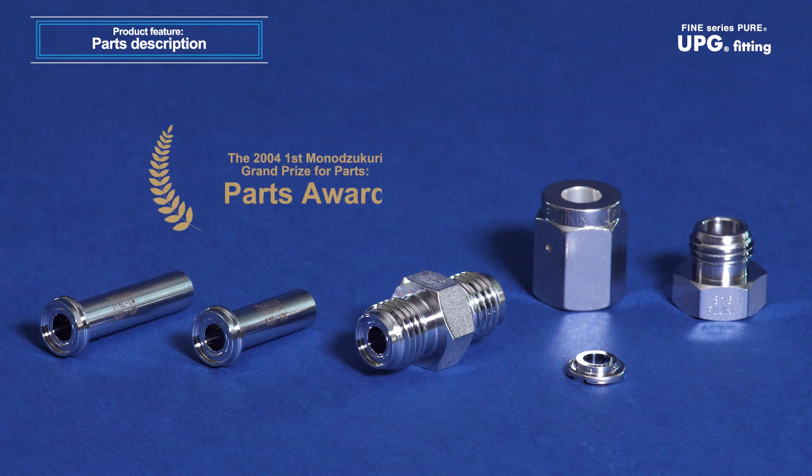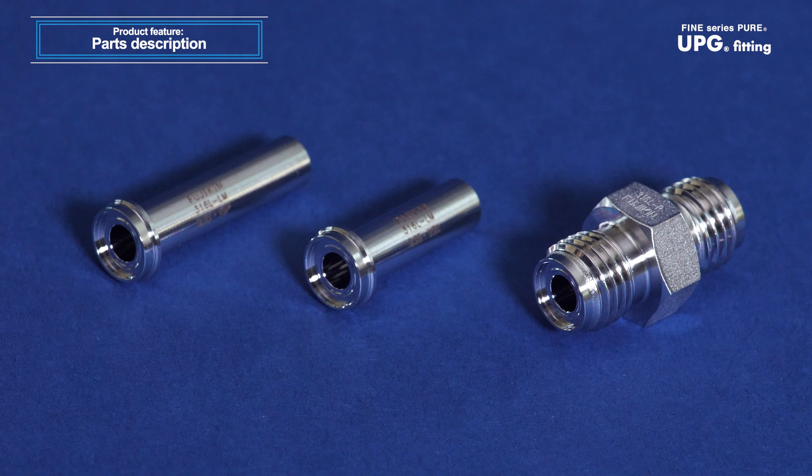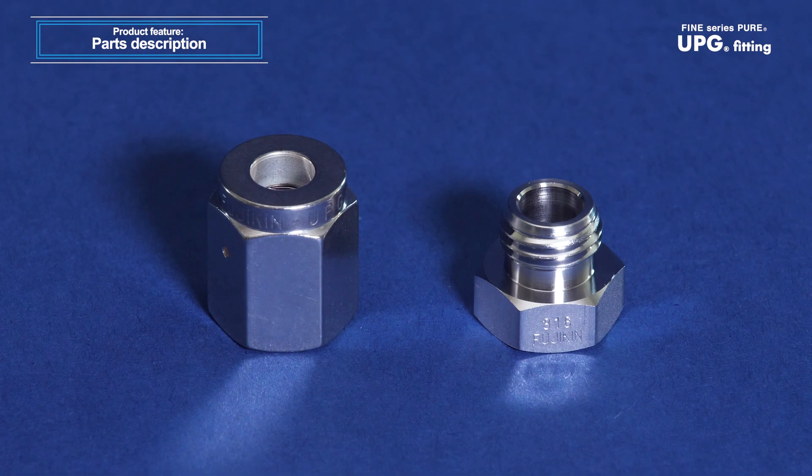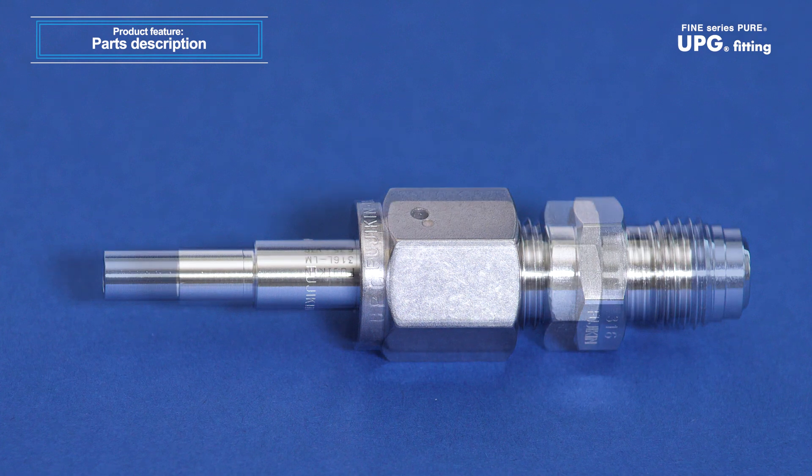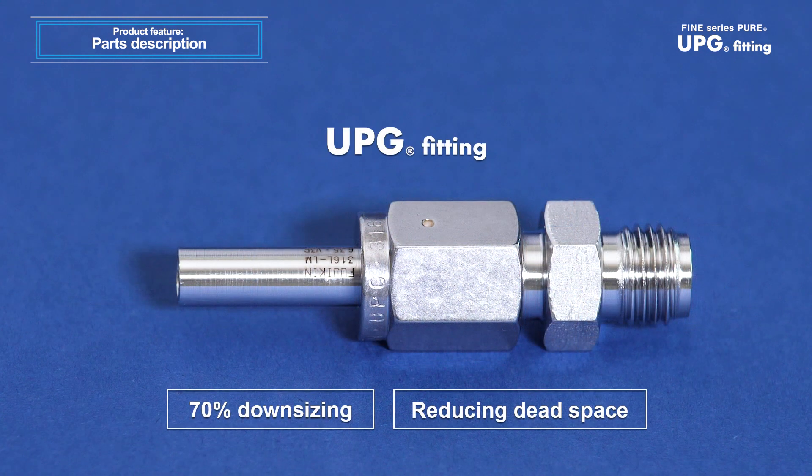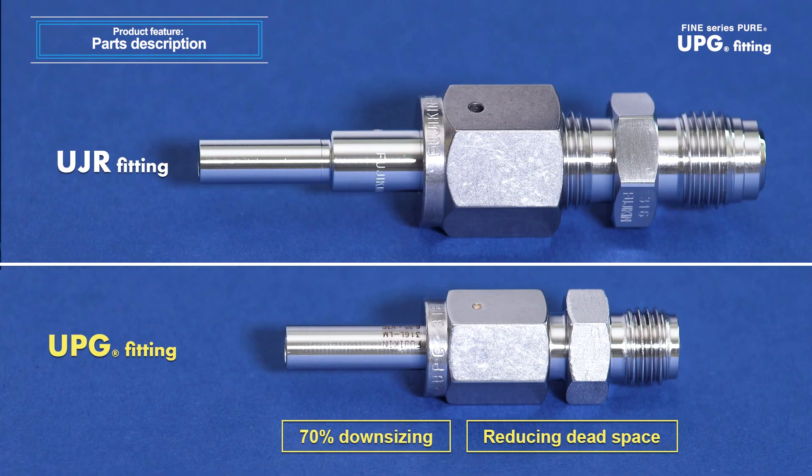A high-performance, ultra-compact gasket fitting, the UPG is Fujikin's original and highly evaluated tube fitting. The UPG is an ultimate ultra-compact fitting that has reduced the footprint to 70% of the UJR fitting, with substantial improvement of seal performance and reduction of dead space inside the fitting.